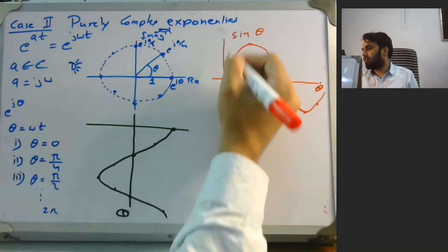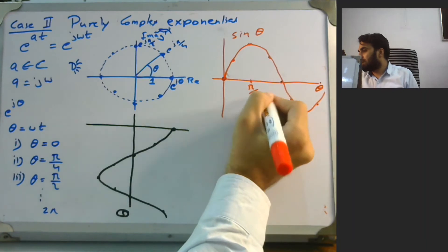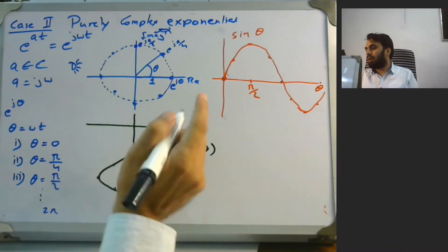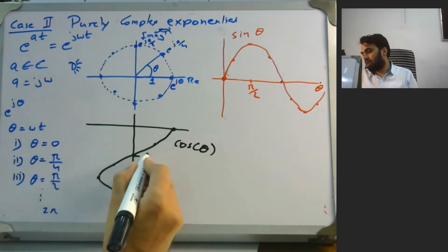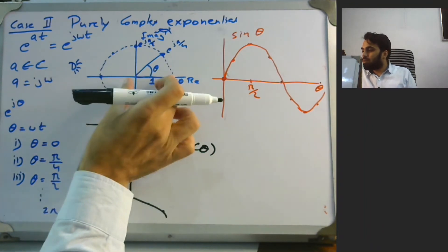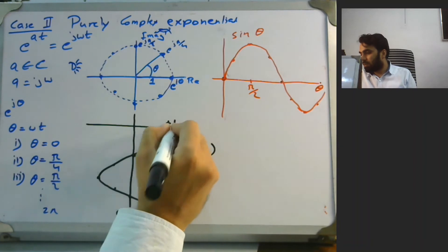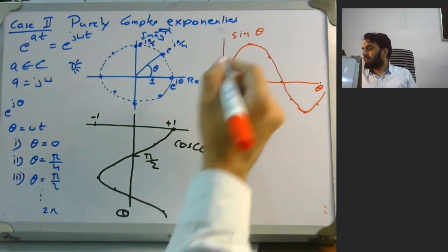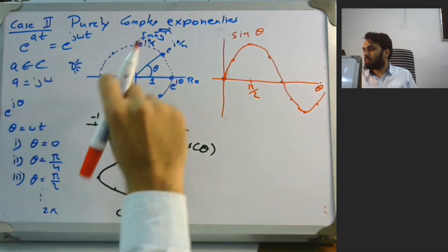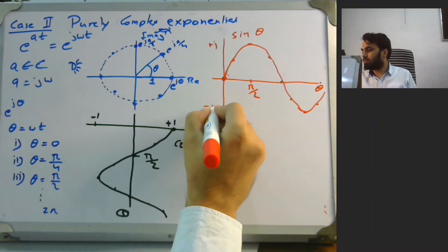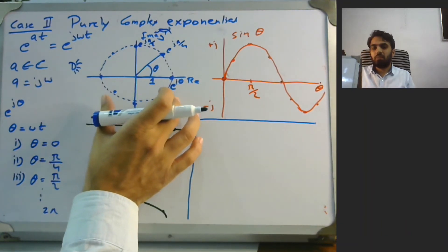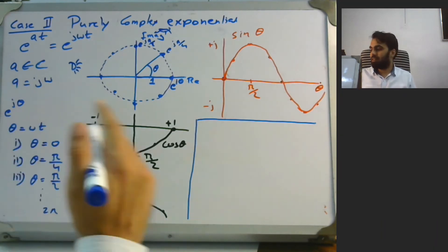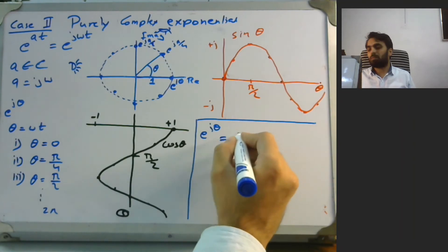When theta equals zero the value is zero, and when theta equals pi over 2 the value is one — this matches the sine function. The cosine function has its minimum at pi over 2. The magnitude is one, ranging from plus one to minus one, while the sine function rotates between plus j and minus j. This means a complex exponential can be broken down into a cosine and a sine function, giving us the well-known Euler's identity: e to the j theta equals cosine theta plus j sine theta.